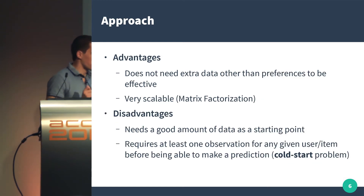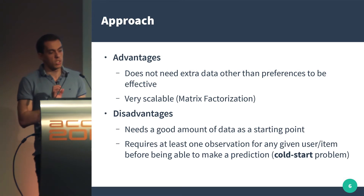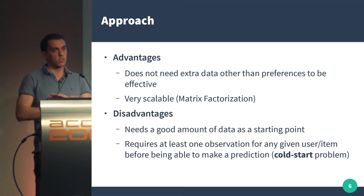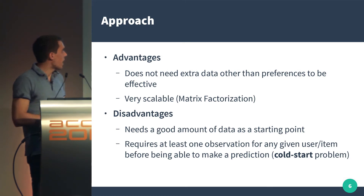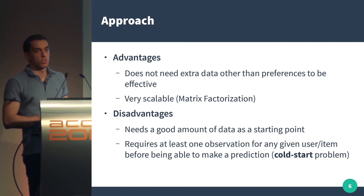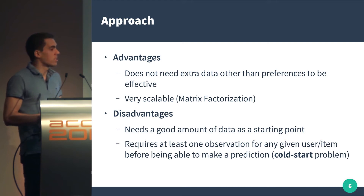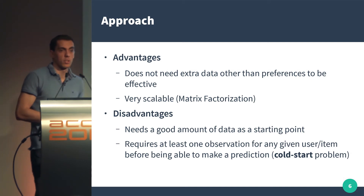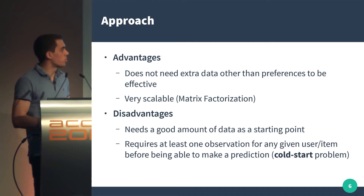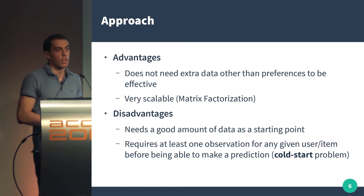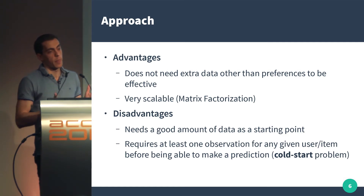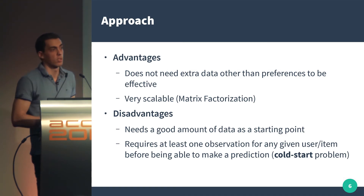The advantages, and the reason I initially selected this model: you only deal with one signal, which means all data problems can be thrown away — you only have to deal with preference, user, and item. By using matrix factorization, it's actually a very scalable approach. The disadvantages: you do need a substantial amount of data to start having good predictions, and the most common problem is the cold start — if you have no preference signal for a user-item combination, you're not able to make any predictions.